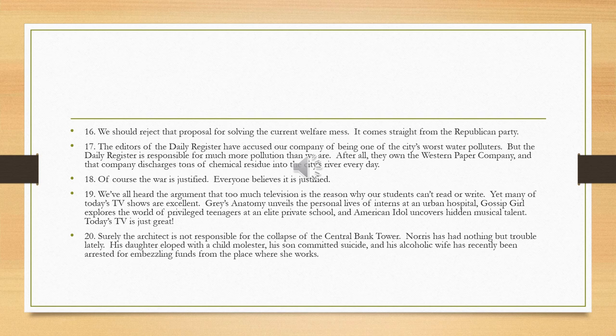Number 18 should be fairly easy to spot now: 'Of course the war is justified — everyone believes it's justified. So if you don't think so, you're not part of the group.' This is a bandwagon fallacy. Number 19 is an example of a red herring. The issue is whether too much television is the reason students can't read or write, and then we suddenly talk about how excellent the TV shows are — that's a distraction, a different topic. Number 20 is an appeal to pity: this architect isn't responsible for the building collapse because his personal life is a disaster. It might be true that his personal life is a disaster, but that doesn't mean he's not responsible — those are two completely different things.